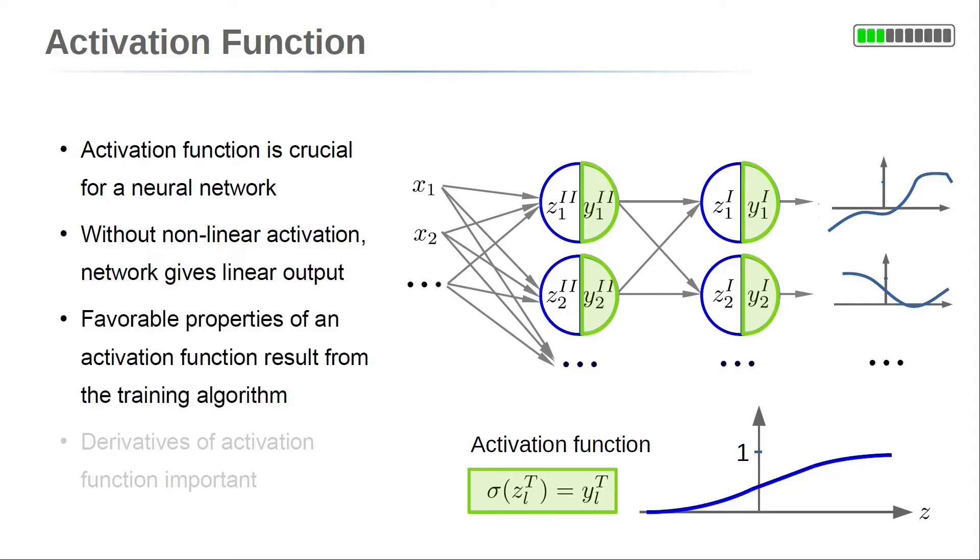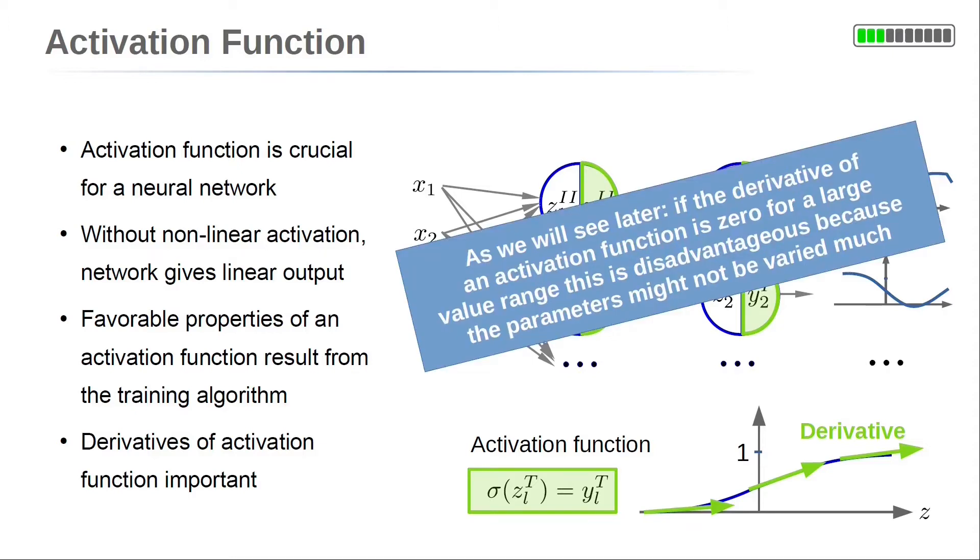Favorable properties of an activation function result from the training algorithm which fits a neural network to data. These algorithms often use a gradient-based minimization approach. This involves derivatives of the activation function. For example,